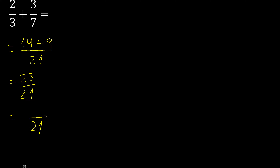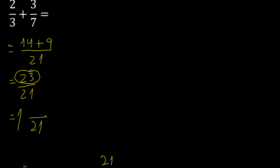21 multiplied by which number is nearest to 23 but not greater? 21 multiplied by 2 is 42, which is greater. 21 multiplied by 1 is 21, which is not greater. So 23 minus 21 is 2 here.